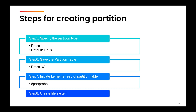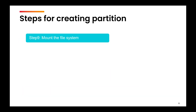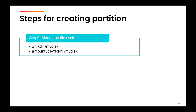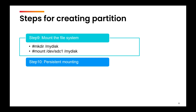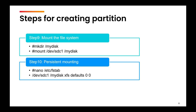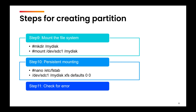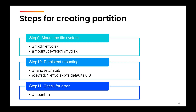Next, step eight is to install the file system using the mkfs command. To use the file system, you must mount it to an existing directory using the mount command — create a directory and use mount to link the partition to it. Content created in that mount point is stored on the partition. To make the mount persistent across reboots, make changes in the /etc/fstab file. Finally, verify everything is correct using the mount -a command.